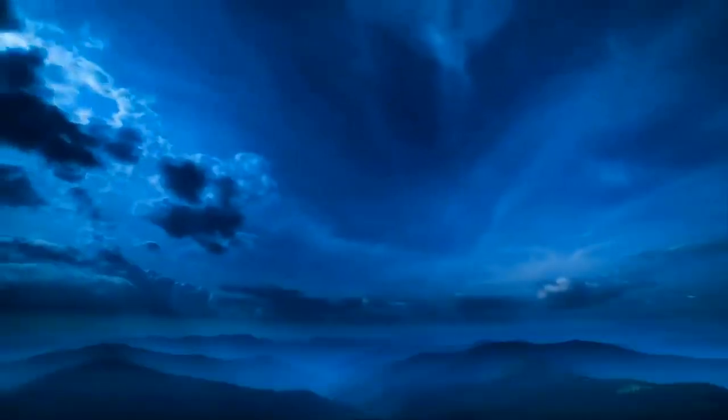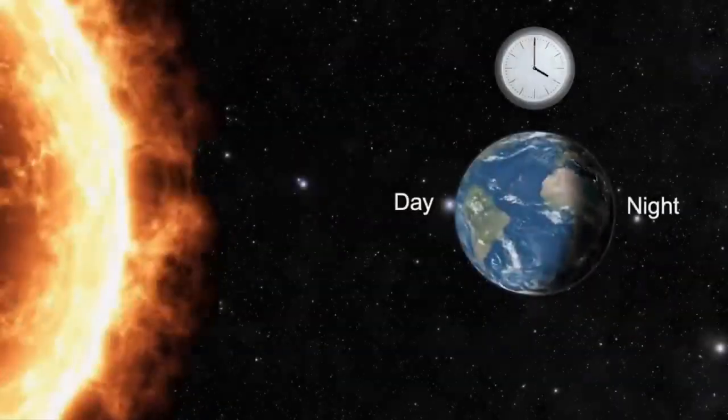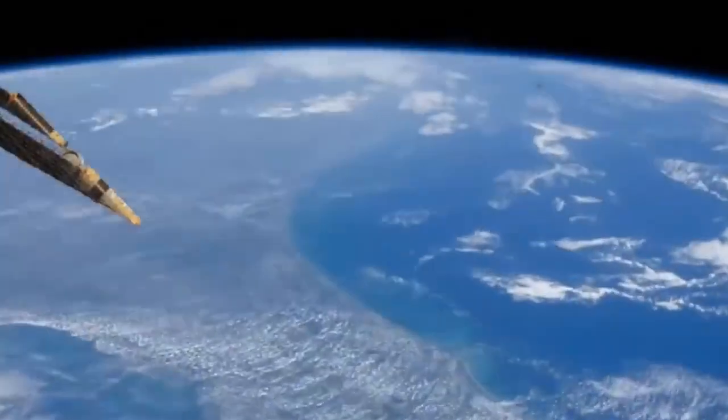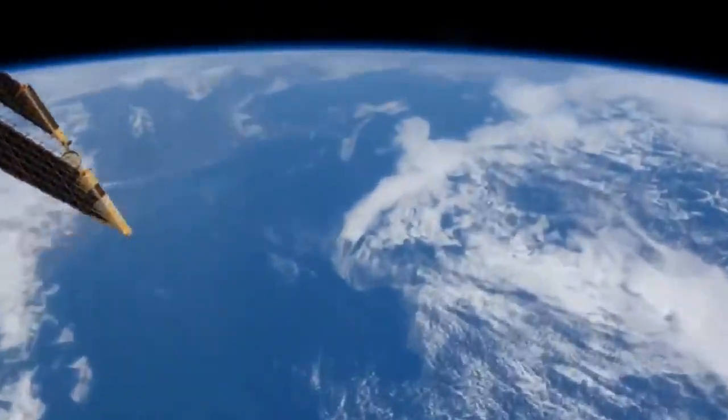During the Northern Hemisphere summer, the North Pole points toward the Sun. And in the Northern Hemisphere winter, the North Pole is tilted away from the Sun.